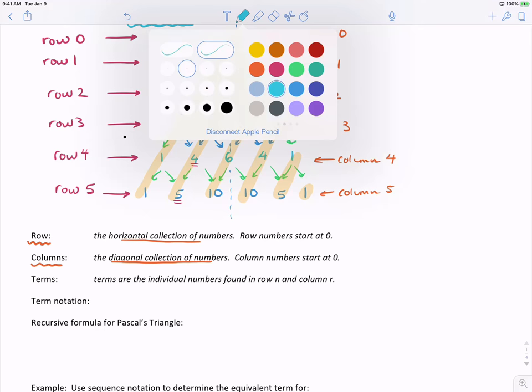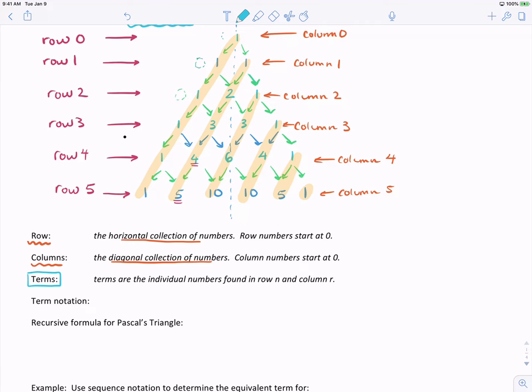Referring to yesterday, we talked about the word term, and it meant a specific number in a row or a column. So the terms are the individual numbers. For example, the 5 above is considered a term, and they're a term in a specific row and a specific column. Notice here, row is N, and we use column defined by the variable R.